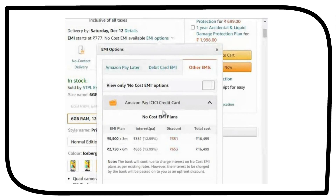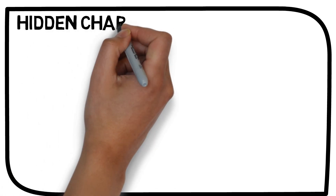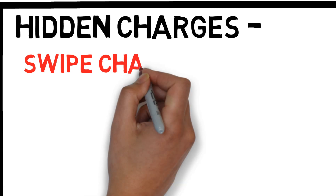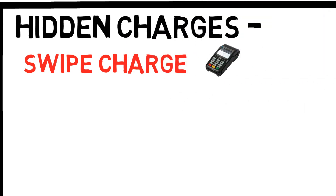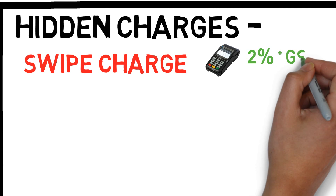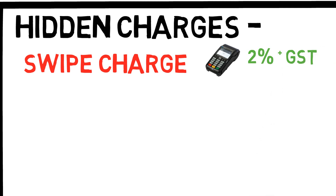That is 60,000 at one go or 10,000 per month for six months, right? No — there are several hidden charges which are not explained at the outset, rendering the purchase more expensive. As they say, there is no free lunch. Let's understand the hidden charges. Swipe charge: if you are buying from offline dealers, they would have to swipe the credit card to give the zero cost offer, and POS machines come with a swipe charge which can be as high as 2%. So on a purchase of 60,000, the swipe charge would come to rupees 1,200. More often than not, the dealer collects the swipe charge in cash from the customer, which adds up to the cost of buying. However, most online aggregators do not levy such charges from the customer.